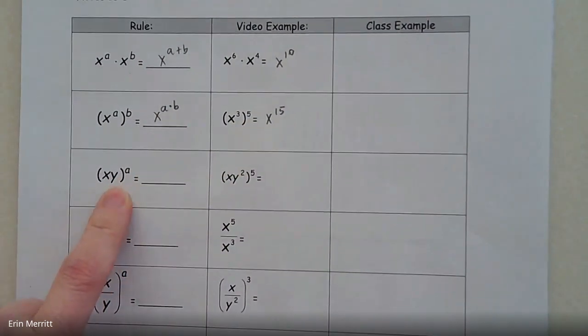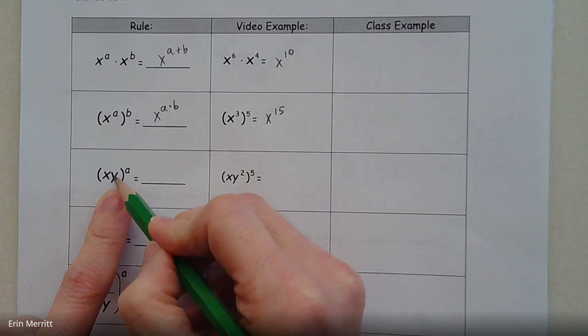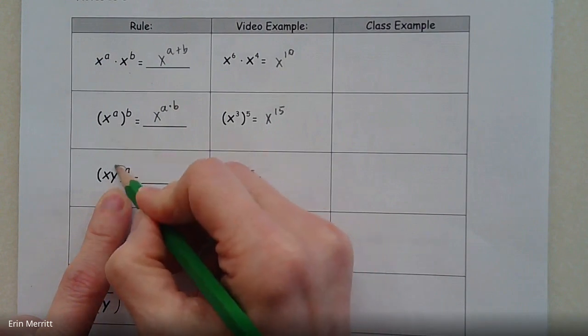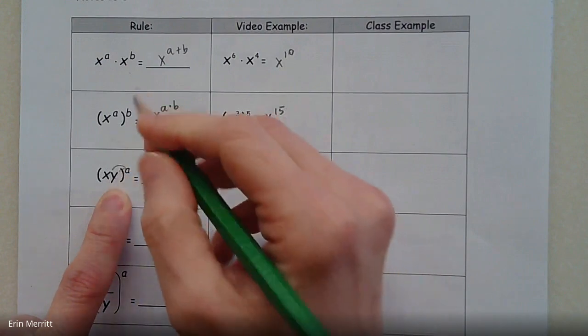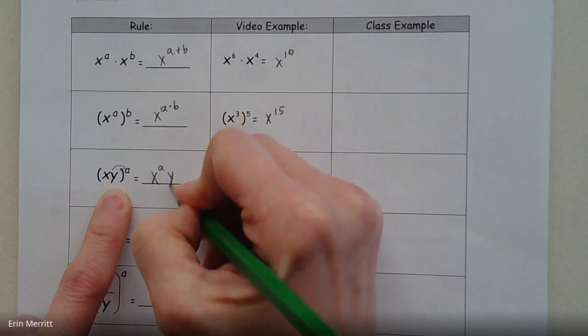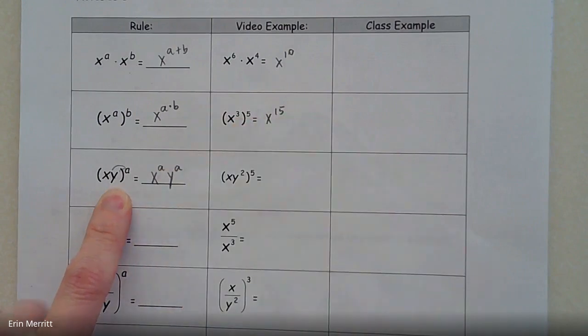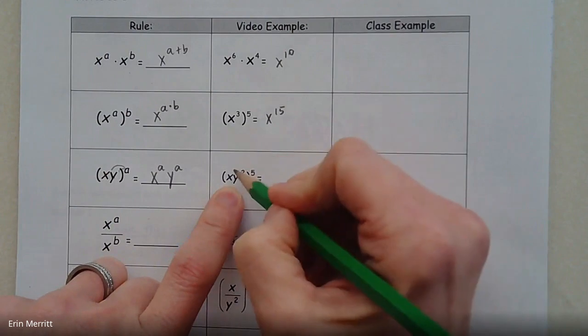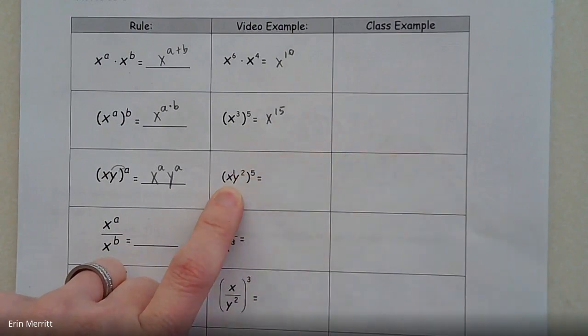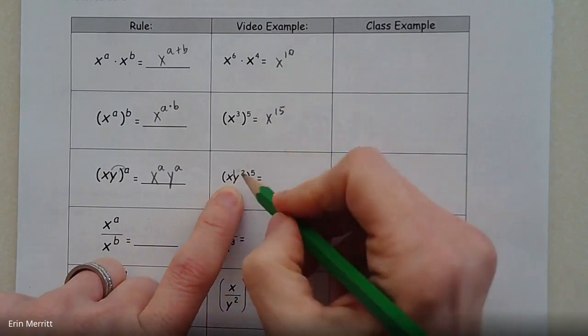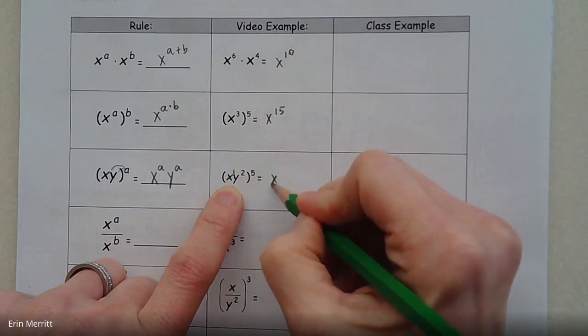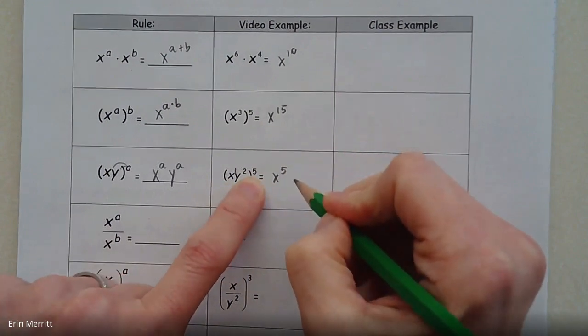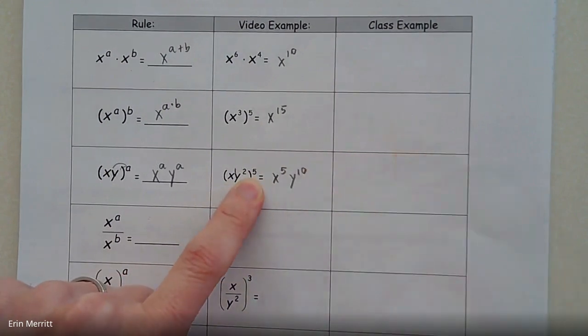For the next one, all this is showing is that if you have things multiplied inside the parentheses, you are allowed to distribute the exponent essentially. So it becomes x to the a times y to the a power. So in this case, there's a little 1 next to that, or on the exponent of the x there. So 1 times 5, we would get x to the 5th. 2 times 5, we'd get y to the 10th.